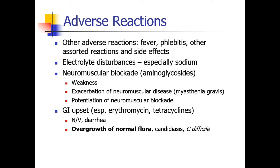Of course there are many other adverse reactions that can occur with these medications, including fever, phlebitis, and many other assorted reactions and side effects. Some antibiotics can cause electrolyte disturbances, especially to sodium. Others can potentiate neuromuscular blockade, especially the aminoglycosides, leading to weakness or exacerbation of pre-existing neuromuscular disease. And many antibiotics cause gastrointestinal upset, especially erythromycin and the tetracyclines — we can see nausea and vomiting, diarrhea, and GI upset due to overgrowth of normal bacterial flora.